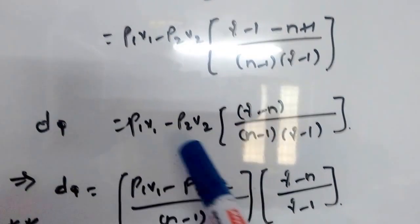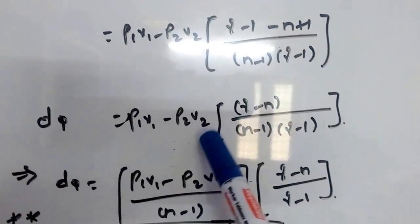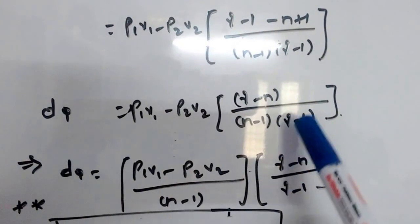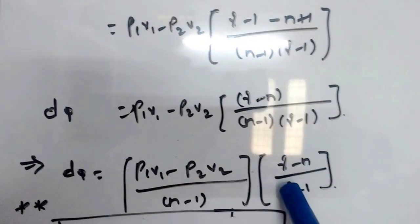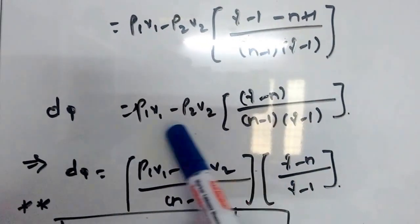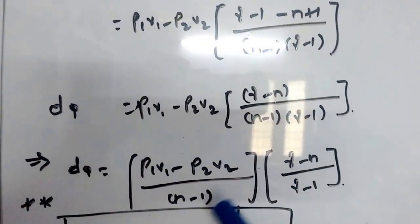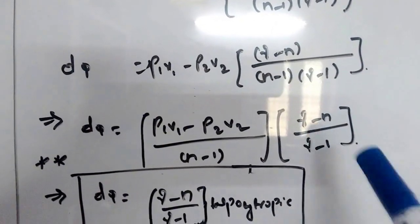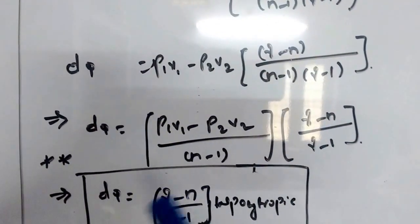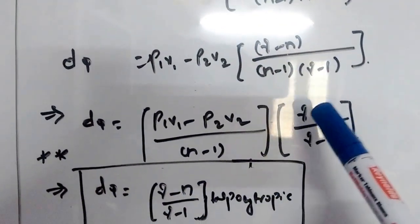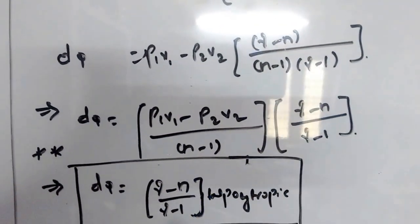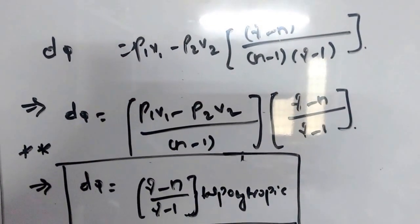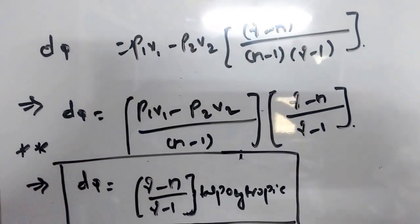This can be written as P1V1 minus P2V2 divided by (n minus 1), into (gamma minus n) divided by (gamma minus 1). Since P1V1 minus P2V2 divided by (n minus 1) is the work done in a polytropic process, therefore dQ equals (gamma minus n) divided by (gamma minus 1) into W_polytropic. This is a very important equation.